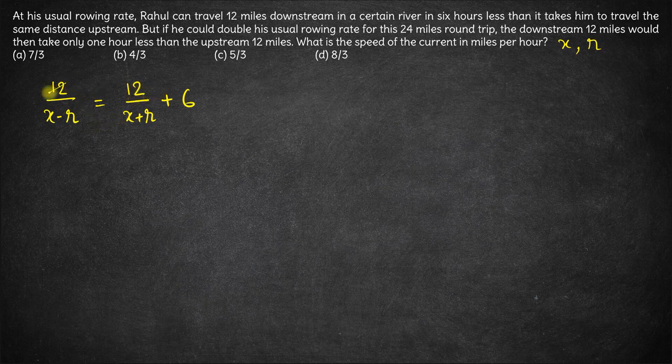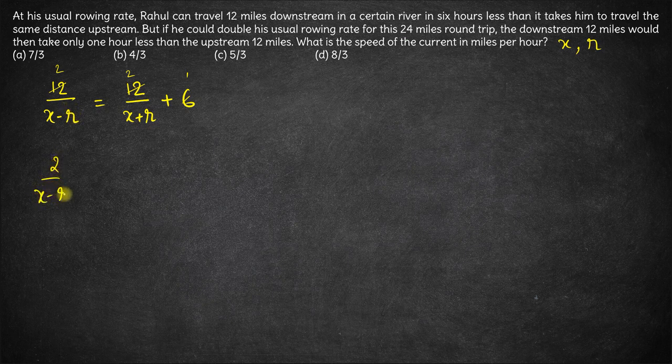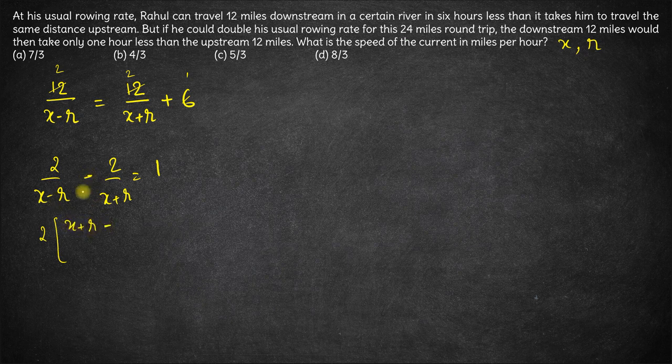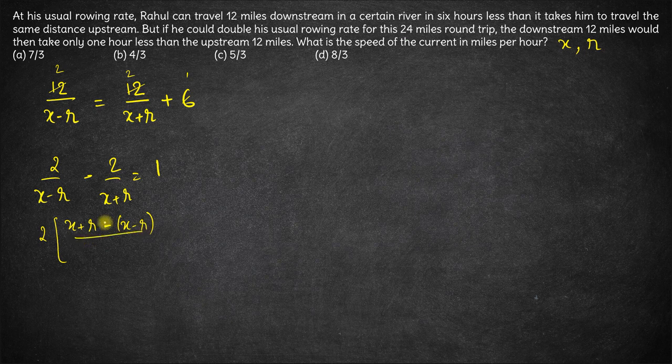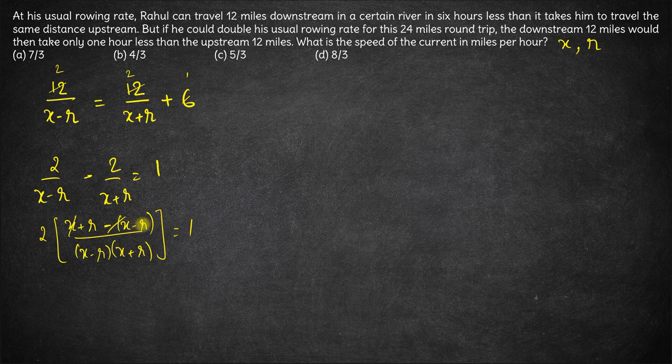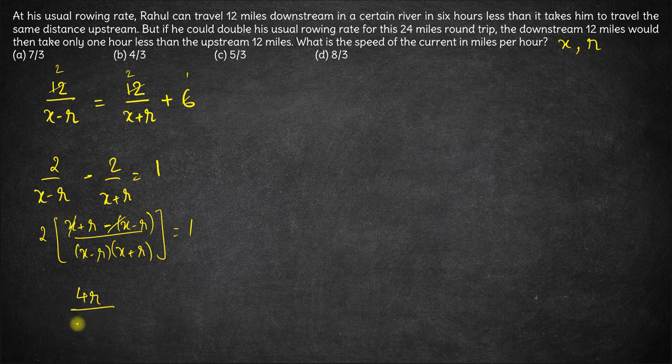So let's solve this. This goes by 6 two times, this goes by 6 two times, this goes by 6 once. So 2 upon x minus r minus 2 upon x plus r is equal to 1. Taking 2 common and taking LCM, we have x plus r minus x minus r upon x minus r into x plus r is equal to 1. So x minus x cancels out, r minus of minus r is plus r, so r plus r is 2r. So twice of 2r is 4r upon x square minus r square equals 1.